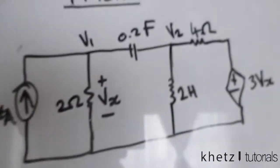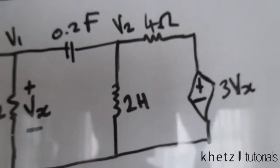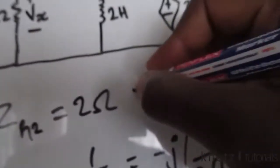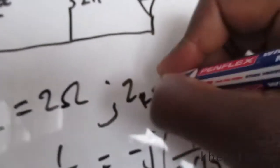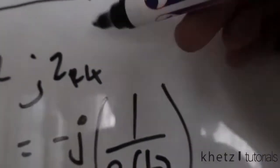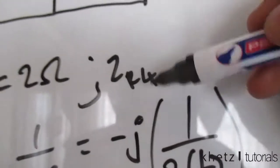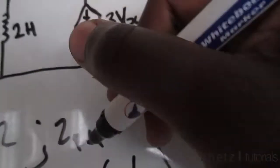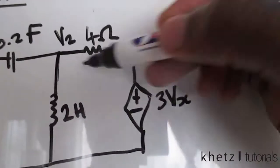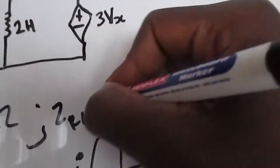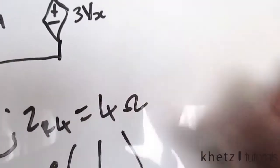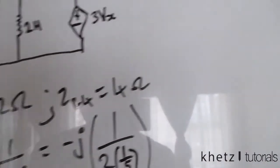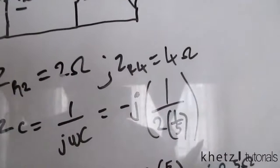Next we move on to the resistor up here. You do the same thing as before. The resistor has a value of 4, so Z_R4, which corresponds to the 4 ohm resistor, is simply 4 ohms — the same as the resistance value itself.